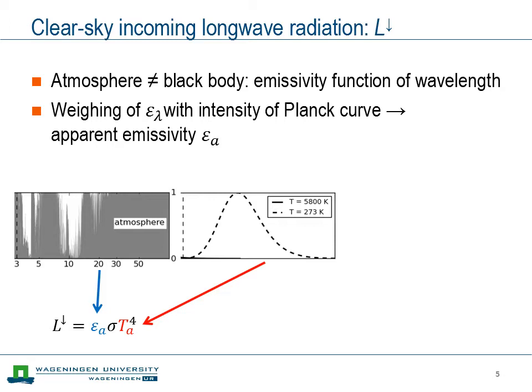In principle, we should take into account that the emissivity is a complex function of wavelength. What we do instead is introduce an apparent emissivity — essentially a weighted average of the emissivity as a function of wavelength, weighted by the intensity of the Planck curve. The emissivity pattern near the center of the Planck curve has the largest impact on the apparent emissivity.